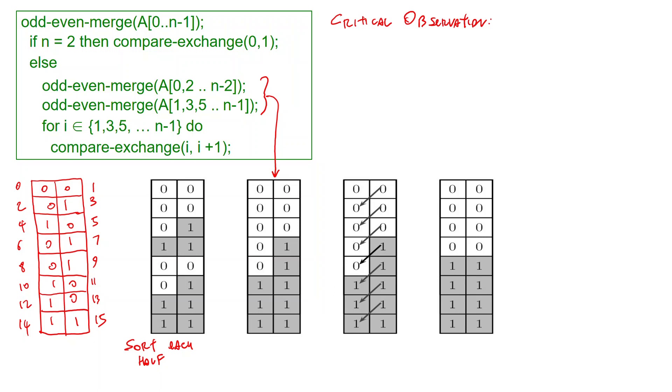The critical observation is that the number of 1s in columns c1 and c2 is within 2 where c1 and c2 are these two columns here. The reason for this is what happens in the previous matrix. Here each half was sorted so if you look at the two corresponding columns in each half the number of 1s will be within 1. So then when you put the two halves together the number of 1s must be within 2.